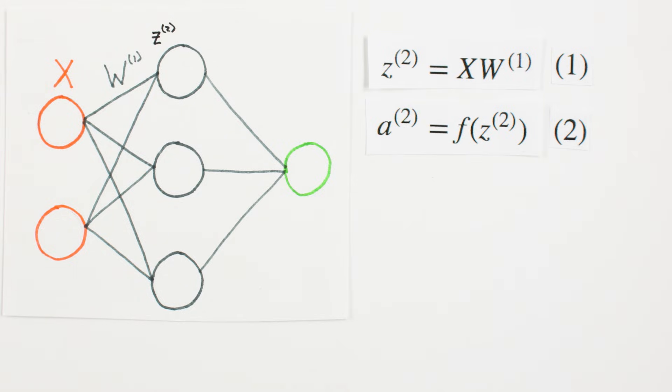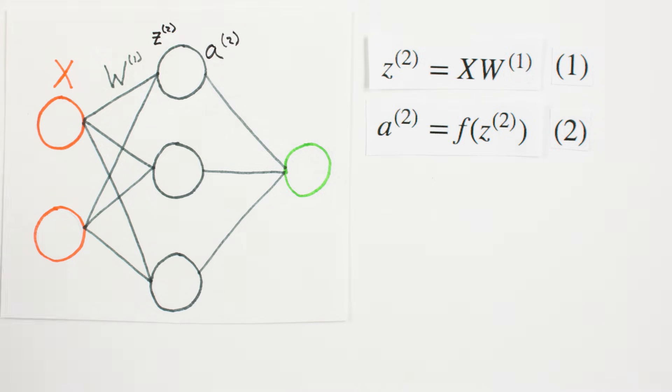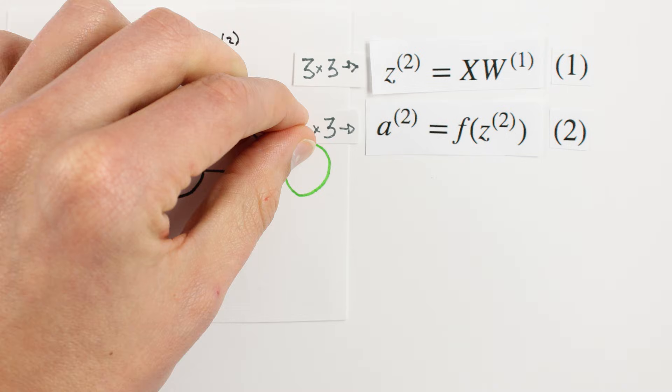We now have our second formula for forward propagation. Using F to denote our activation function, we can write that A2, our second layer of activation function, is equal to F of Z2. A2 will be a matrix the same size as Z2, in this case 3 by 3.